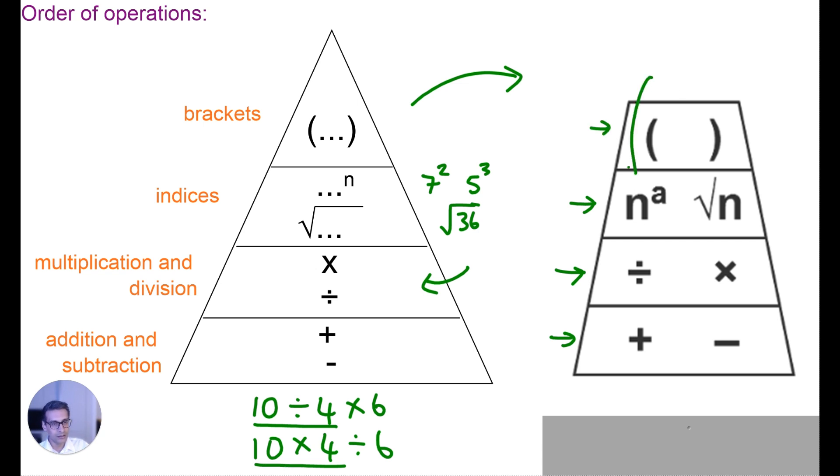Okay, so in this case it could be, for example, 7, and the a could be another number, like 2, a to the power 2, and so on. So this is what we're going to look at when we refer to the order of operations pyramid.